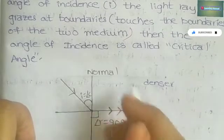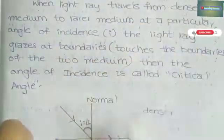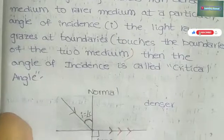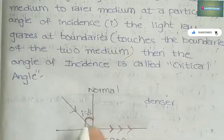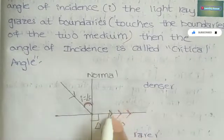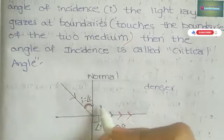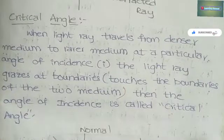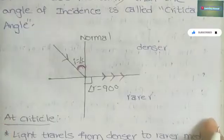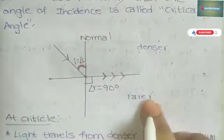When light ray travels from denser medium to rarer medium at a particular angle of incidence, the refracted ray — instead of entering the rarer medium — just touches the boundary of the two media. At that point, the angle of incidence is called the critical angle. This is the definition; we have to write it without any mistakes. For the ray diagram, we must mention normal, denser medium, rarer medium, and arrow marks should be correct.